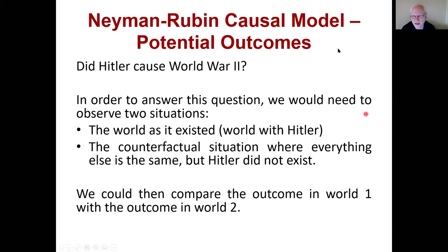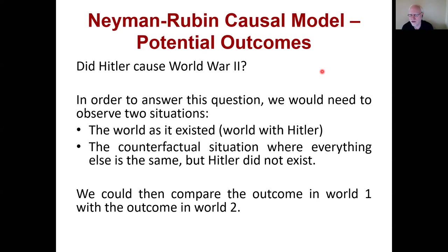Now we'll cover an introduction to experimental methods. We're going to talk about the logic of experimentation — why it's necessary and what major problem we need to overcome in finding causation. We'll use the Neyman-Rubin causal model, often just called the Rubin causal model, and the potential outcomes framework. Let's start with a thought experiment: Did Hitler cause World War Two? This question — not what actually happened, but did Hitler cause it — will help illustrate the causal reasoning challenge.